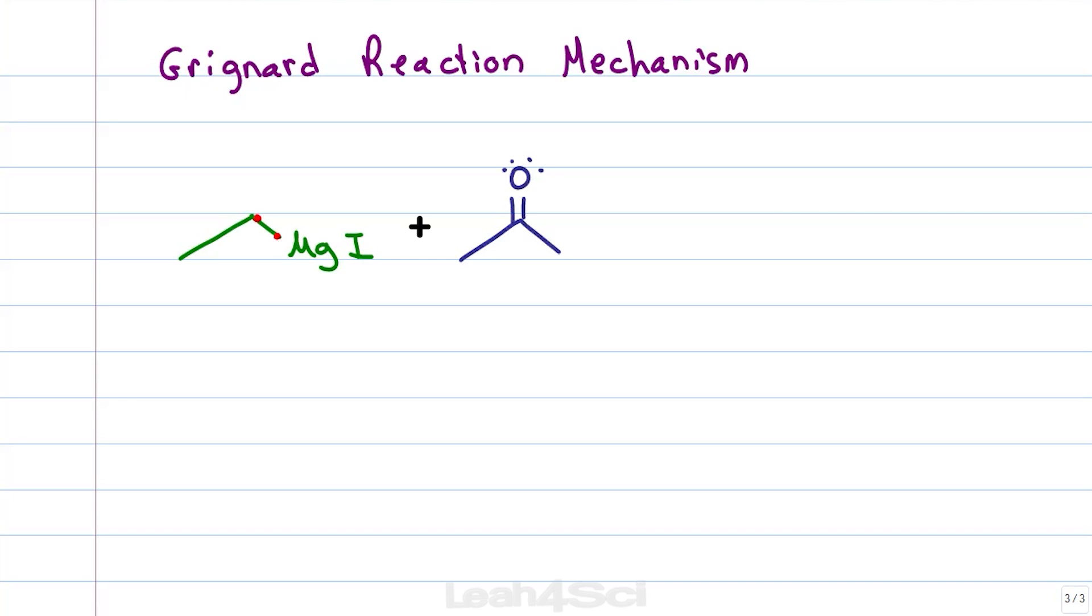First remember, the bond between carbon and magnesium is the bond that's going to attack because this is the carbon that's very carbanion-like. Recall that in a carbonyl we have resonance between the carbon and the oxygen making the oxygen very partially negative and the carbonyl carbon very partially positive.